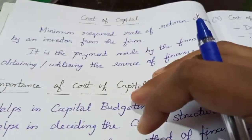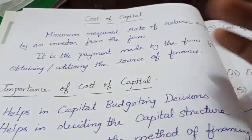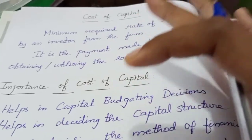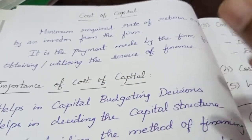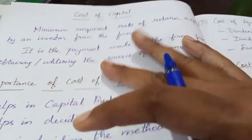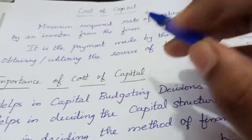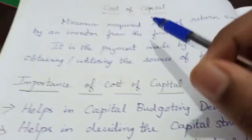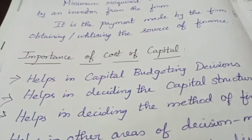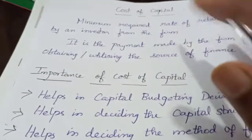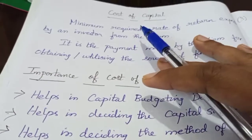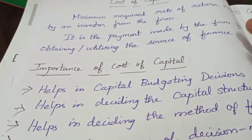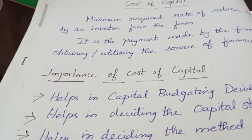For the company, funds can be raised through equity shares, preference shares, and debentures. The main objective of the firm regarding cost of capital is to reduce and minimize it while maximizing the wealth of investors.